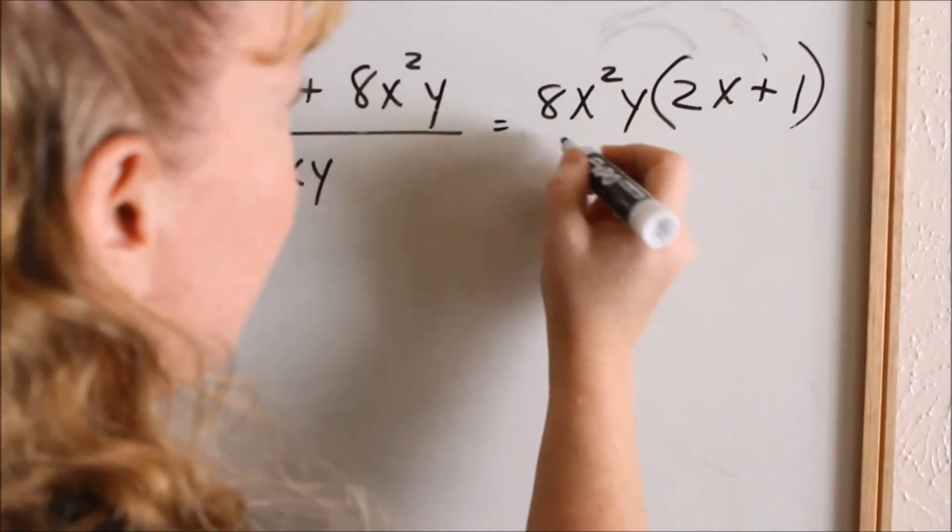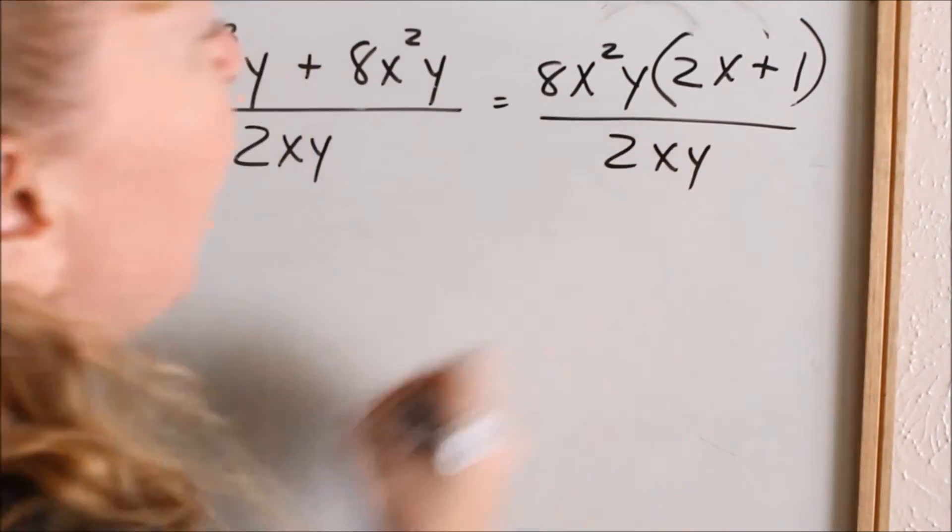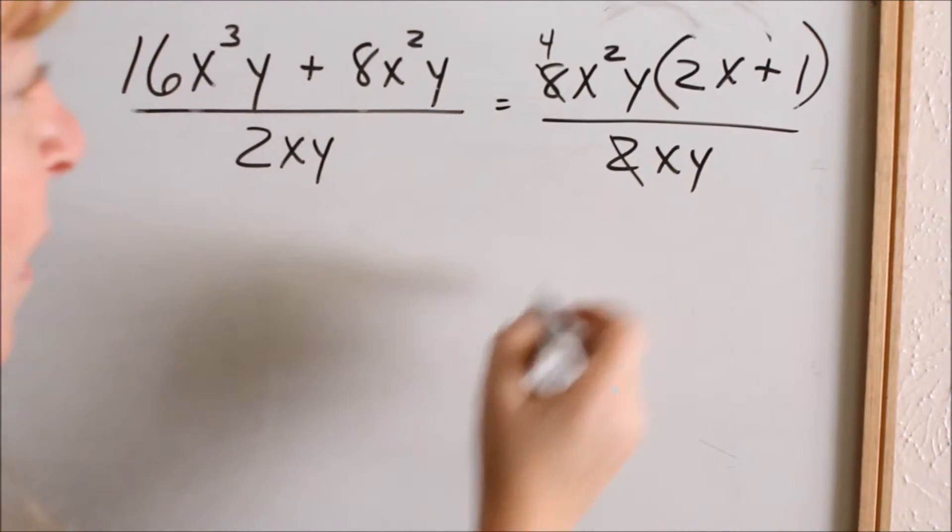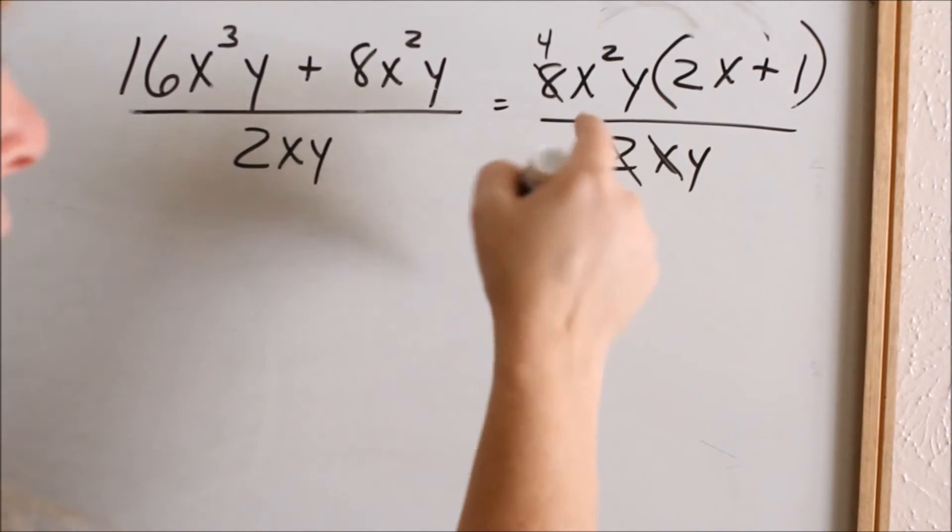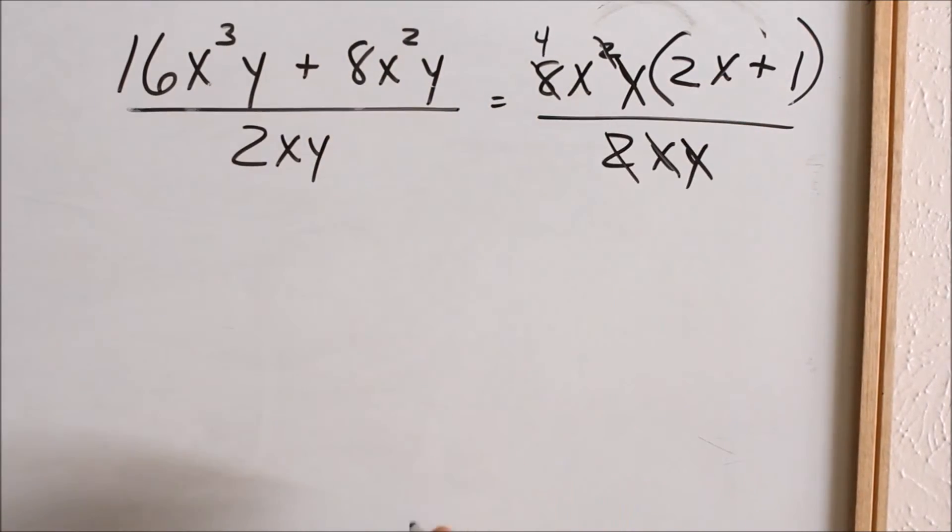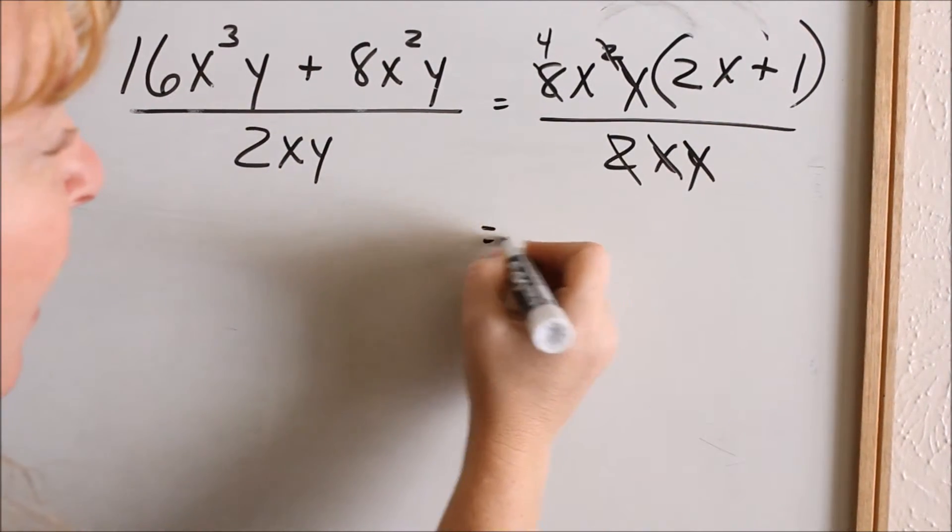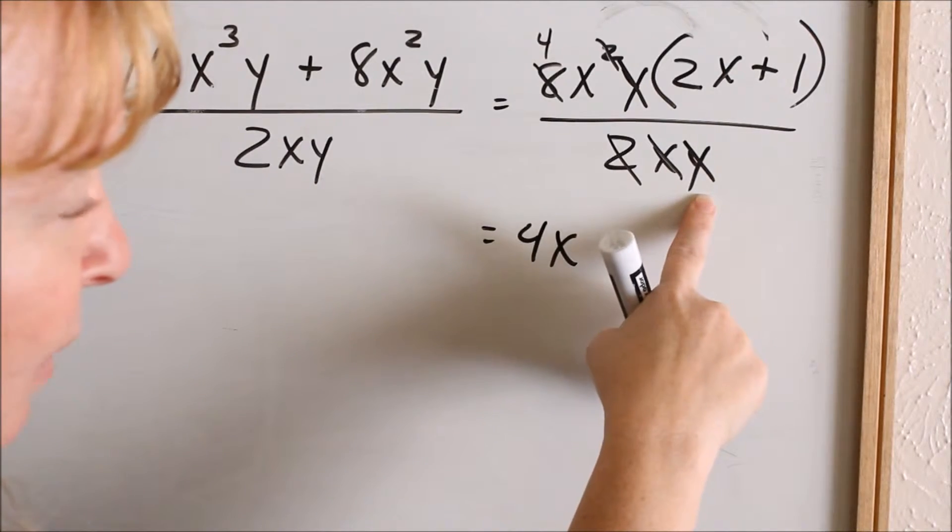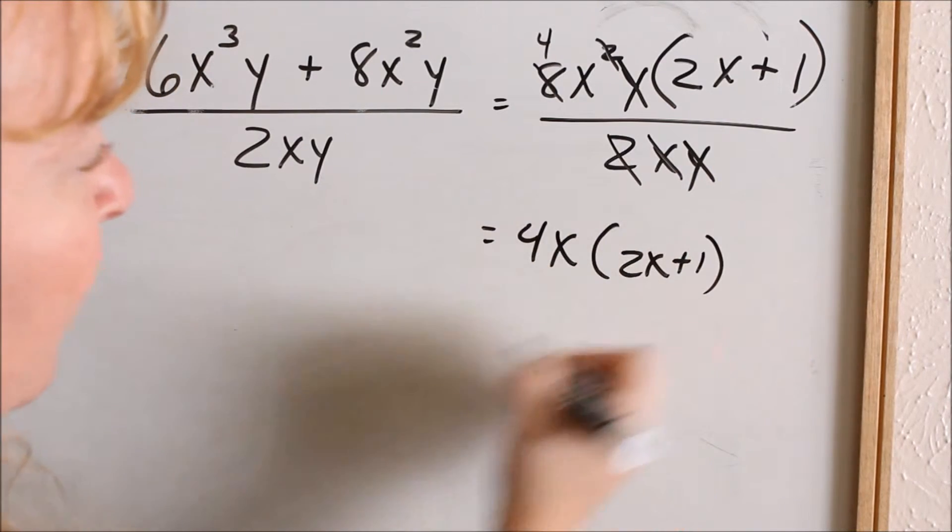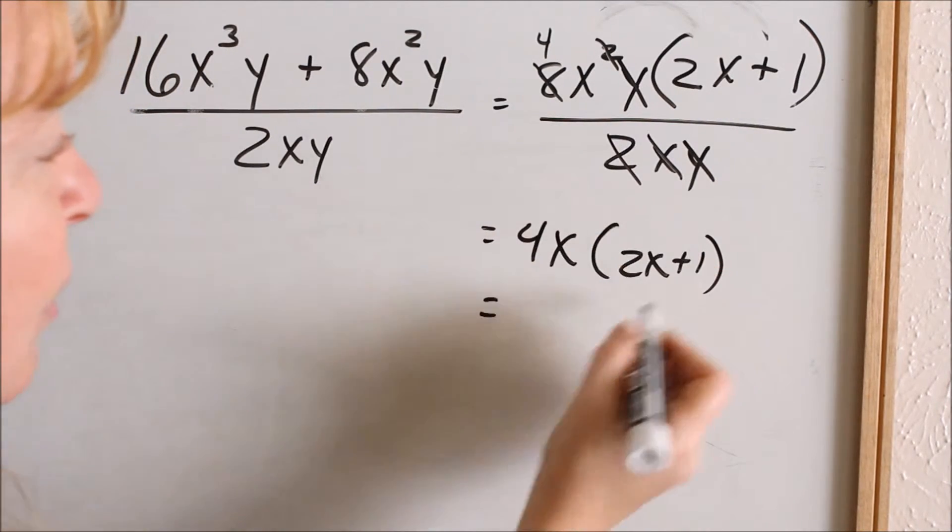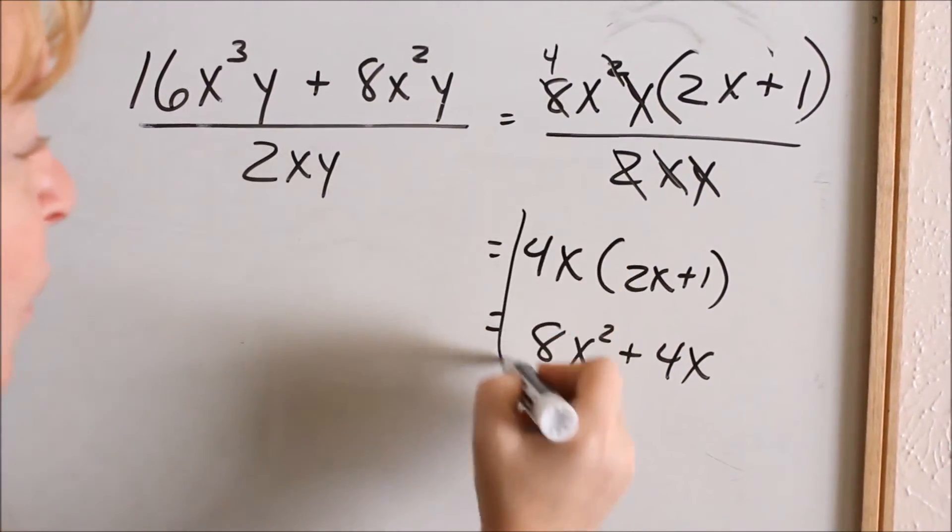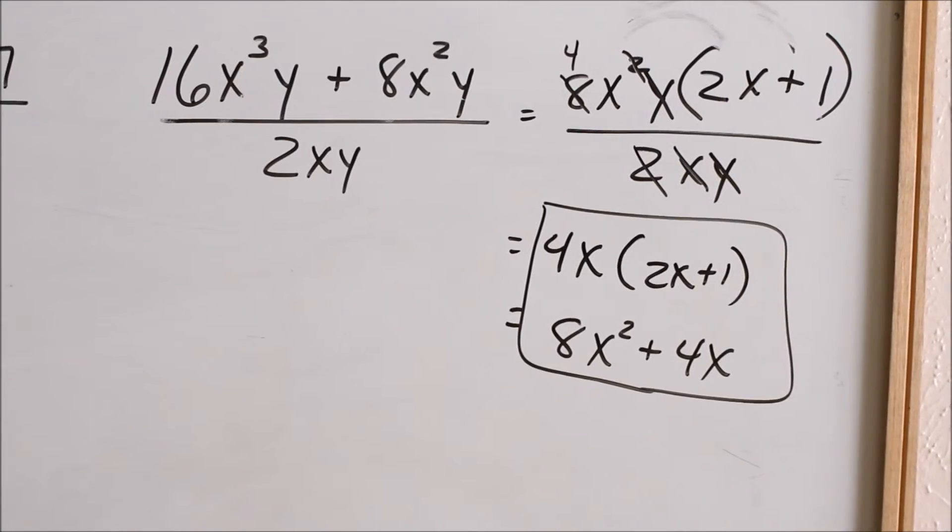So I still have my denominator, 2xy. Now I can cancel. This 2 goes into this 8 four times. This x will cancel with 1 of my x's there. So I usually just mark out my exponent. This y cancels with that y. So what did I have left? I had 4x. I don't have anything in the denominator, so it became a 1. I don't have to write that. 2x plus 1. You can either write that or you can distribute it out, 8x squared plus 4x. Either one of these answers is acceptable.